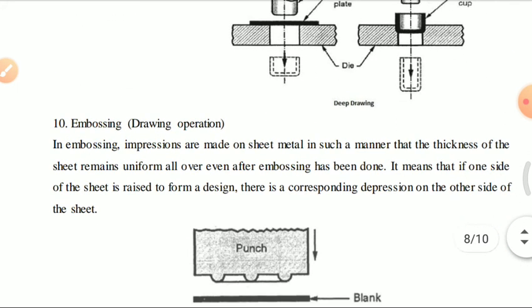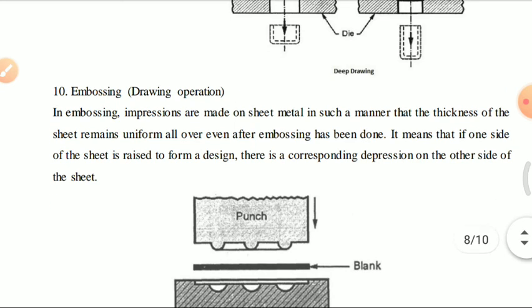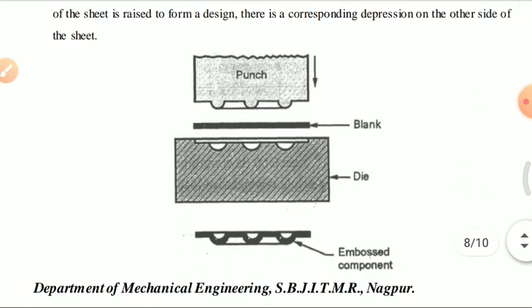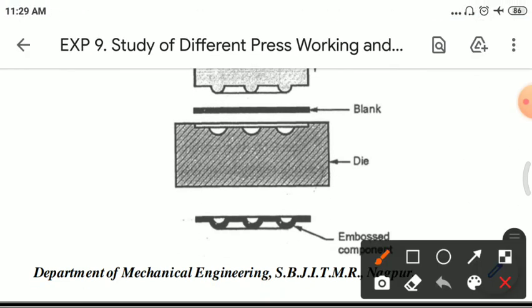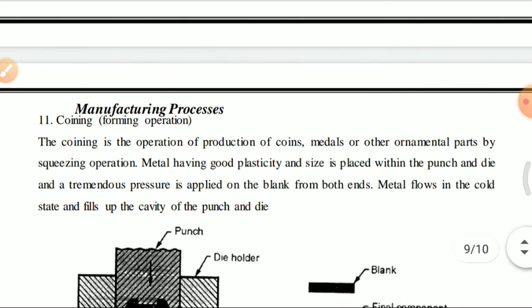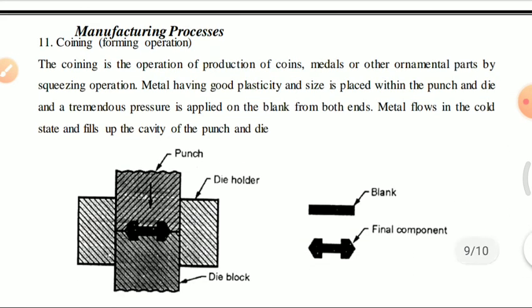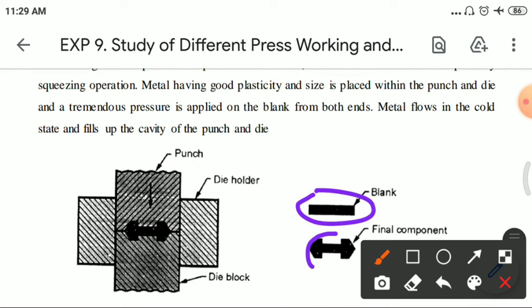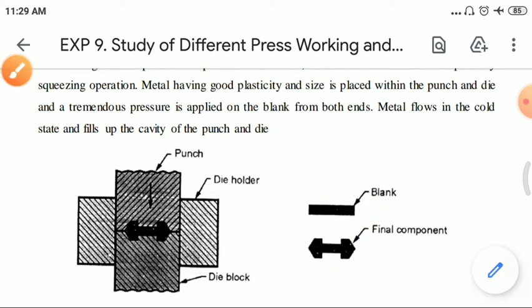Squeezing operations involve pressing the workpiece between two pressure pads. Embossing creates an impression on sheet metal such that the thickness of the sheet remains uniform throughout — the shape changes but thickness does not. Coining, on the other hand, involves a change in thickness — the initial and final thickness are different. Coining is generally used to produce coins.